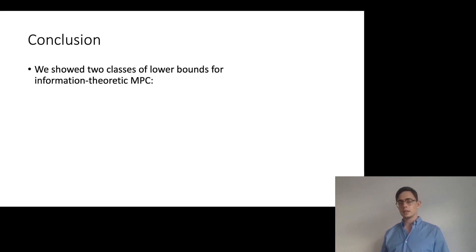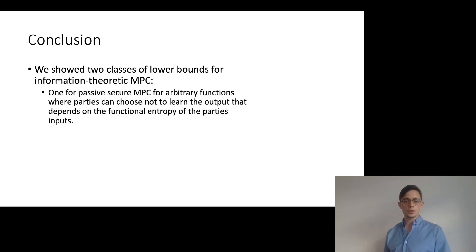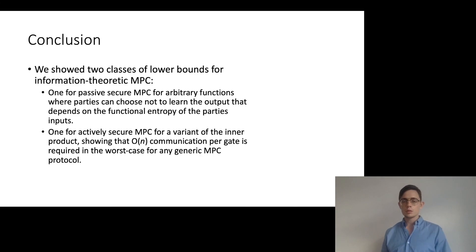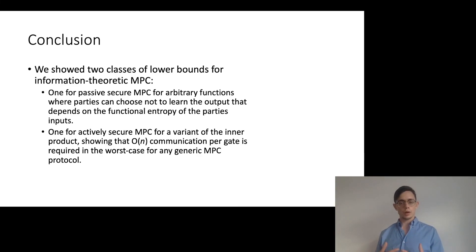To summarize: in this talk we showed two classes of lower bounds for information-theoretic MPC. One is for passively secure MPC for arbitrary functions with the constraint that parties can choose to not learn the output, and we showed a lower bound depending on the functional entropy of the inputs. Then we showed a lower bound for actively secure MPC for a variant of the inner product, showing that Ω(N) communication per gate is required in the worst case for any generic MPC compiler.